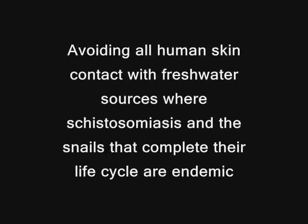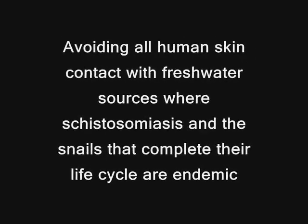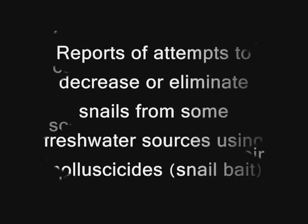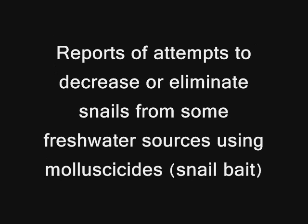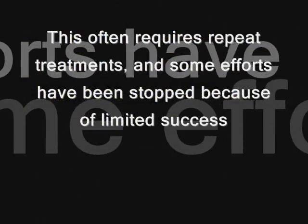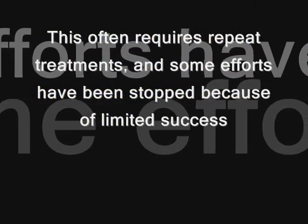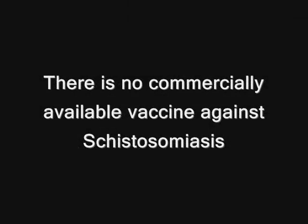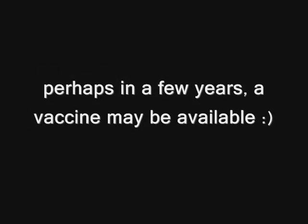Theoretically, the disease can be prevented by avoiding all human skin contact with freshwater sources where Schistosomiasis and the snails that complete the life cycle are endemic. However, this is unlikely to occur in most developing countries. Reports of attempts to decrease or eliminate snails from freshwater sources using molluscicides have reported a decrease in the number of people infected, but this often requires repeated treatments and some efforts have been stopped due to limited success. Unfortunately, people who are treated and have no symptoms can easily become reinfected if exposed to cercariae again. The human immune response often is not able to prevent infection. There is no commercially available vaccine against Schistosoma, but research is ongoing and perhaps in a few years a vaccine may be available.